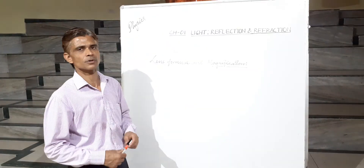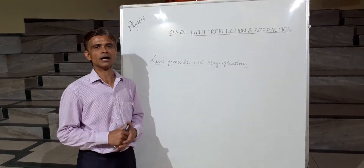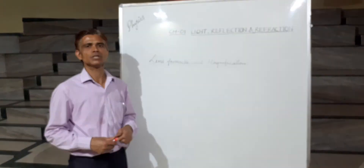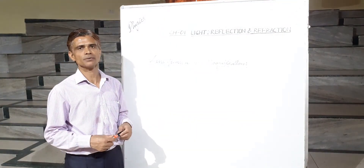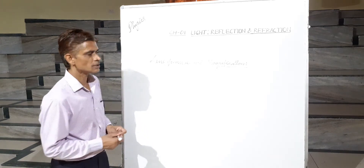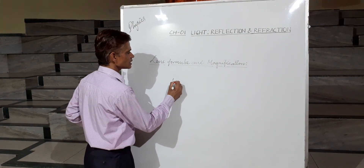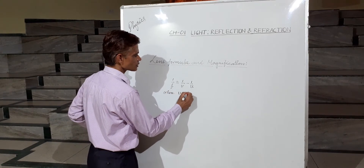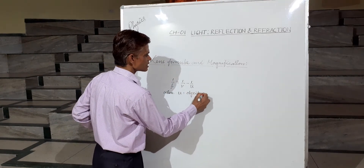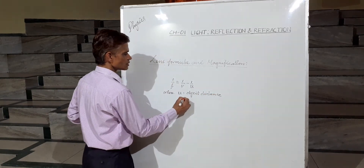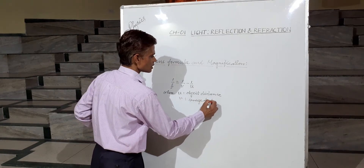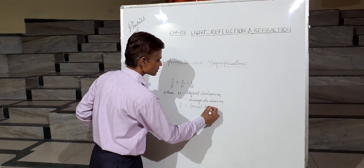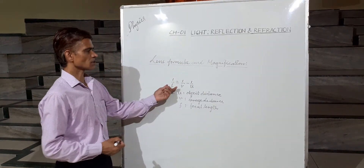Good morning, students. Today we are going to discuss the Lens Formula and Magnification. The formula which relates the object distance u, image distance v, and the focal length of a lens is called the Lens Formula. It is given by 1/f = 1/v − 1/u, where u is the object distance, v is the image distance, and f is the focal length. This is called the Lens Formula.